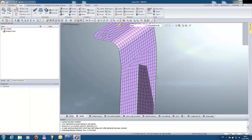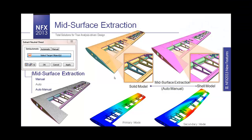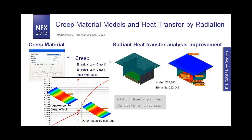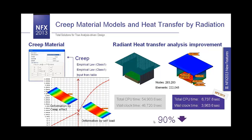After mid-surface extraction, another addition to NFX 2013 is creep material models. NFX can now consider creep with three different model types: empirical law or inputs from a table. Another improvement is radiant heat transfer analysis. Previously, analysis time for such a model was 46 seconds, but this has been improved to 3.9 seconds — a 90% improvement in heat radiation analysis speed.